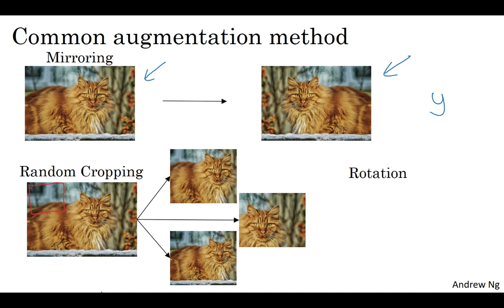In theory, you could also use things like rotation, shearing of the image, so that's if you do this to the image, distort it that way, introduce various forms of local warping, and so on. There's really no harm with trying all of these things as well, although in practice, they seem to be used a bit less, perhaps because of the complexity.